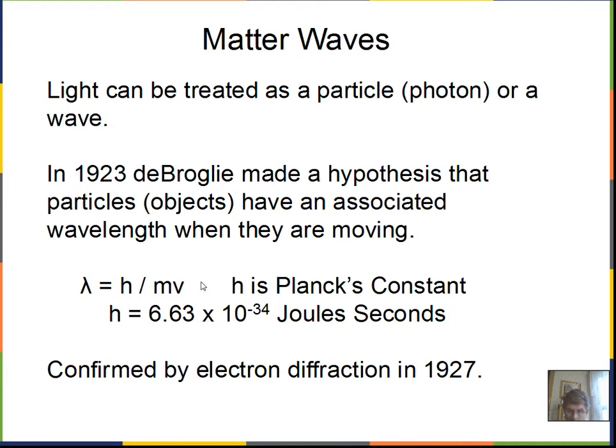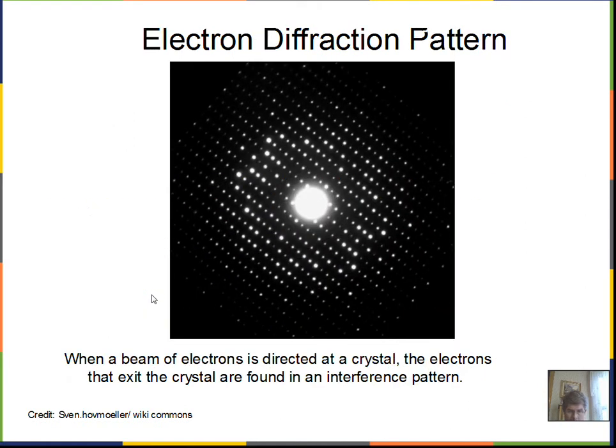The ball will go kind of where you expect, straight ahead. It does not have an interference maximum off to the right or off to the left by 20 degrees or something, as we calculated for some of the light going through a double slit. So everyday objects, they do travel as a wave, but their wavelength is so small that they don't exhibit diffraction or interference effects. We need a very small mass object to give us this effect, and we have that with electrons and protons. So I just wanted to emphasize that a little bit.